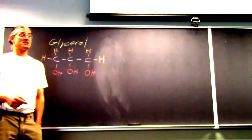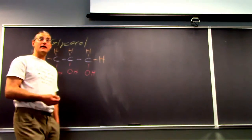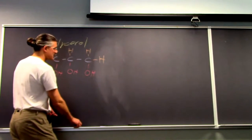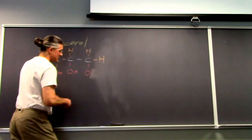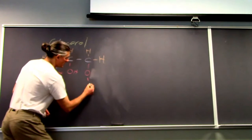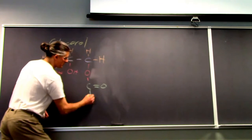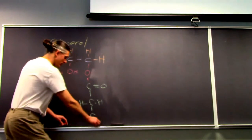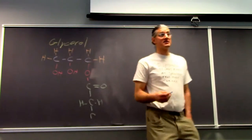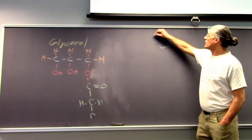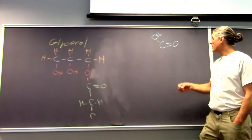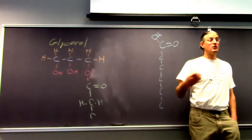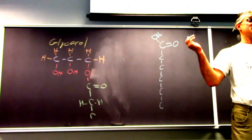Each one of these hydroxyl groups is reactive, and what the body does is it attaches something called fatty acids to the hydroxyl groups through what's known as an ester linkage. A fatty acid looks like this: a carboxyl group — C double bond O, OH — and then a bunch of other carbons. It can be quite long, maybe 18, 20, or 16 carbons.